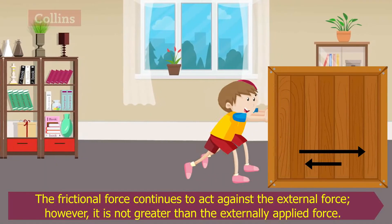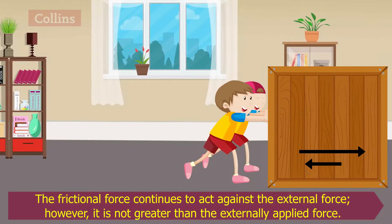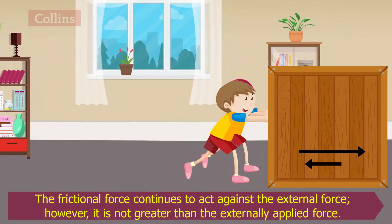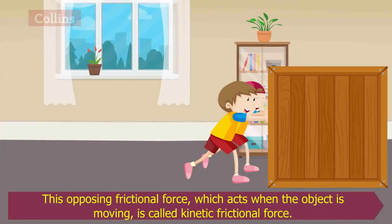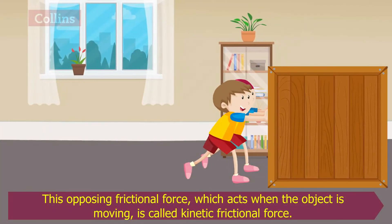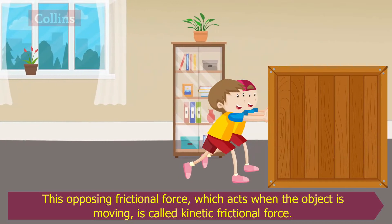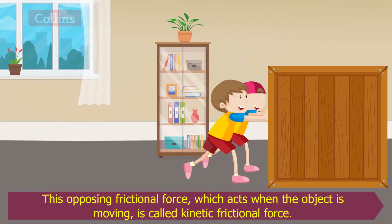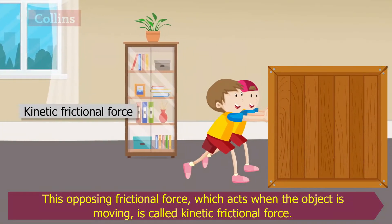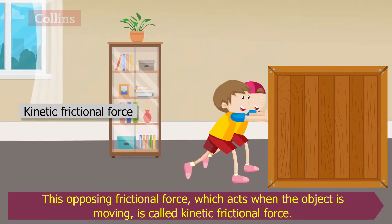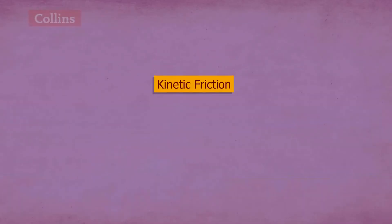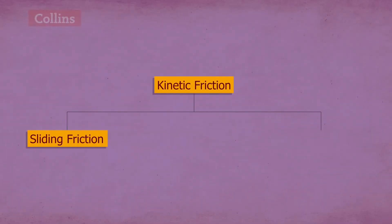However, it is not greater than the externally applied force. This opposing frictional force, which acts when the object is moving, is called kinetic frictional force. Kinetic friction is of two types: sliding friction and rolling friction.